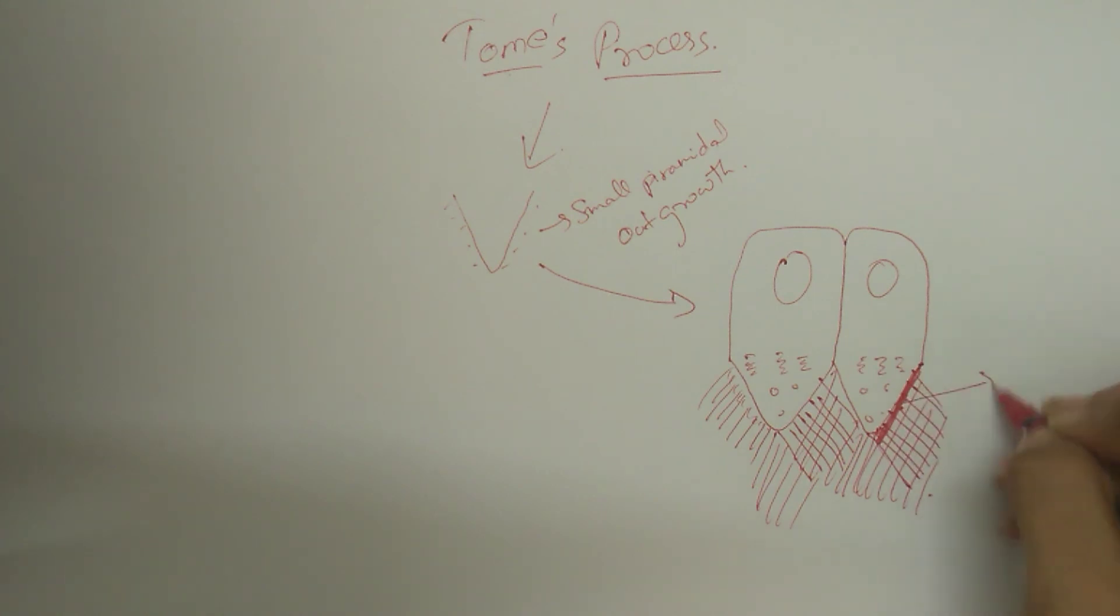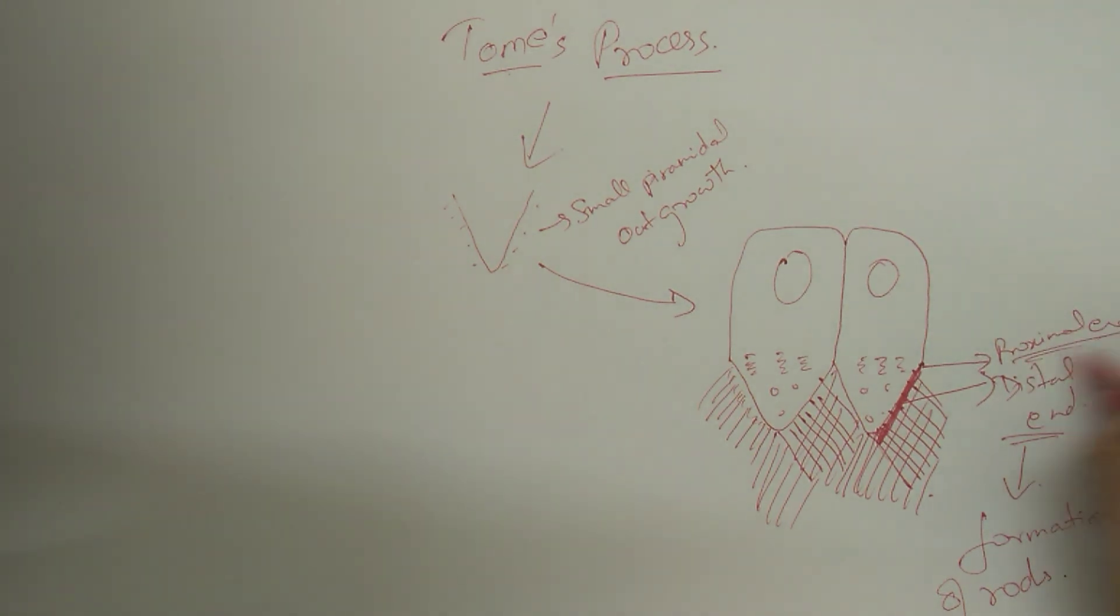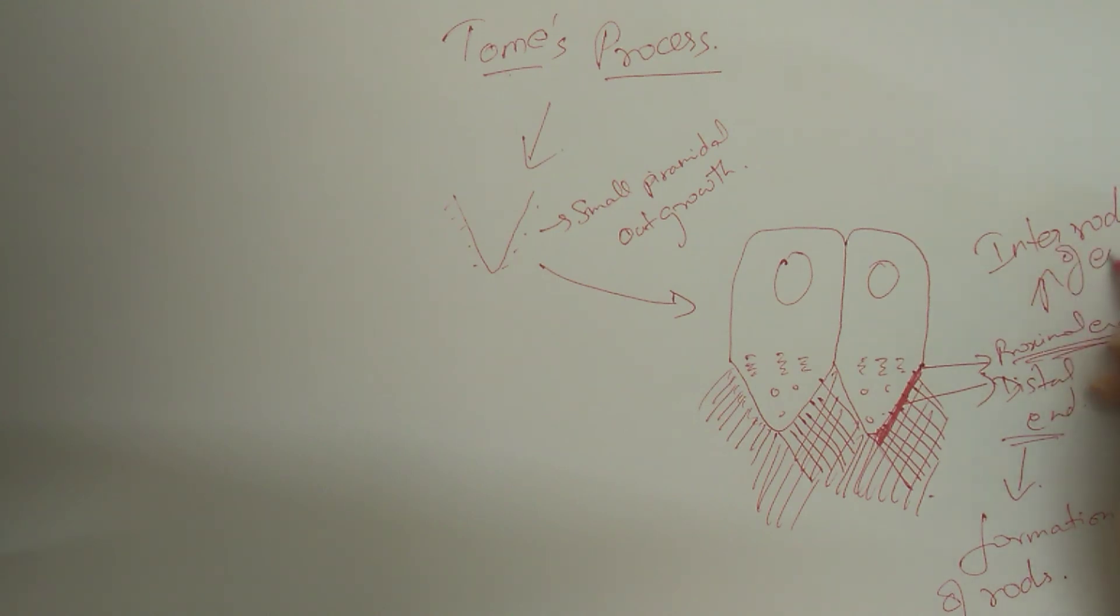When the first layer of enamel is laid, the Tomes process consists only of the proximal portion and the initial enamel is rodless. As the first layer of enamel forms, the ameloblasts move away from the surface of the dentin. This leads to the development of the distal portion of the Tomes process.